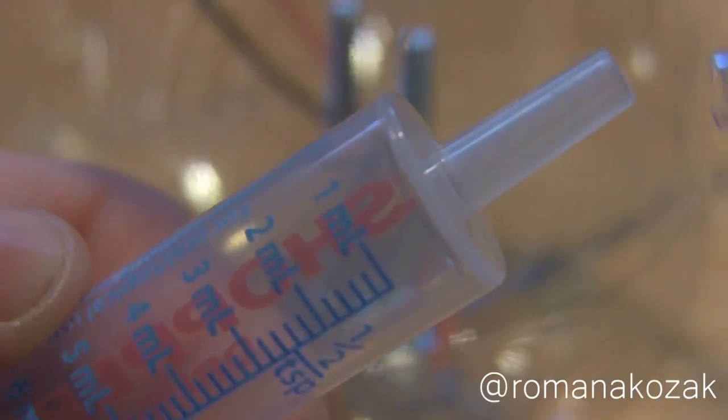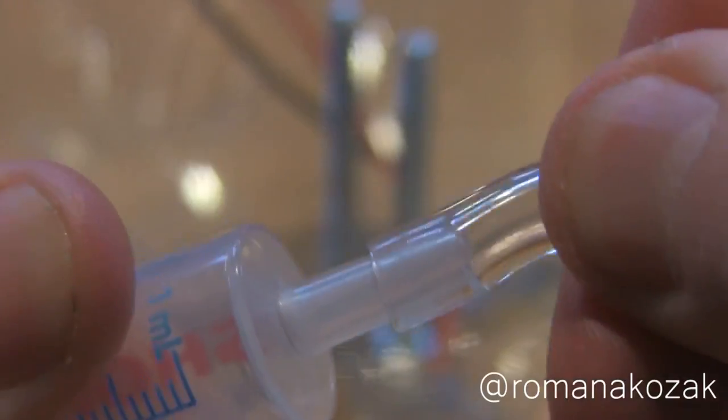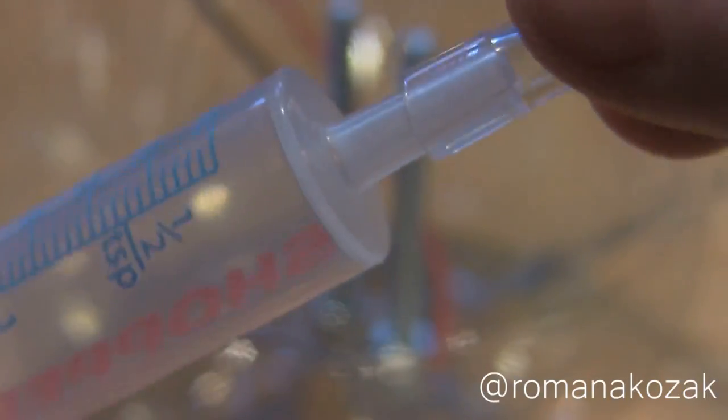Next take around a 15 milliliter syringe with a quarter inch tube and place that on the top. This will be put over the cathode and will be collecting hydrogen gas.